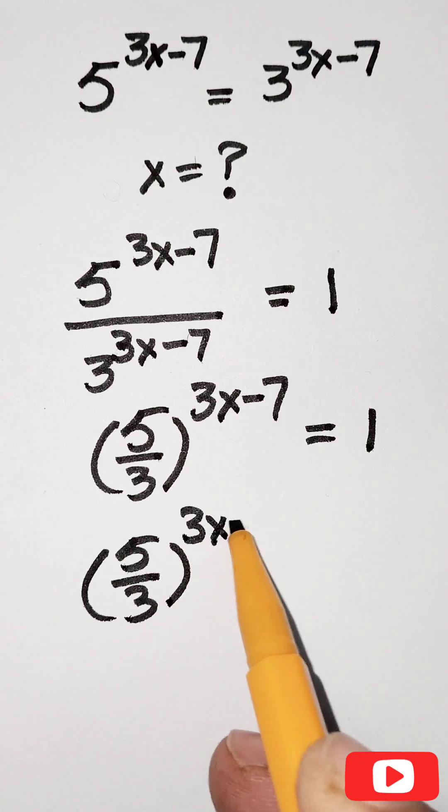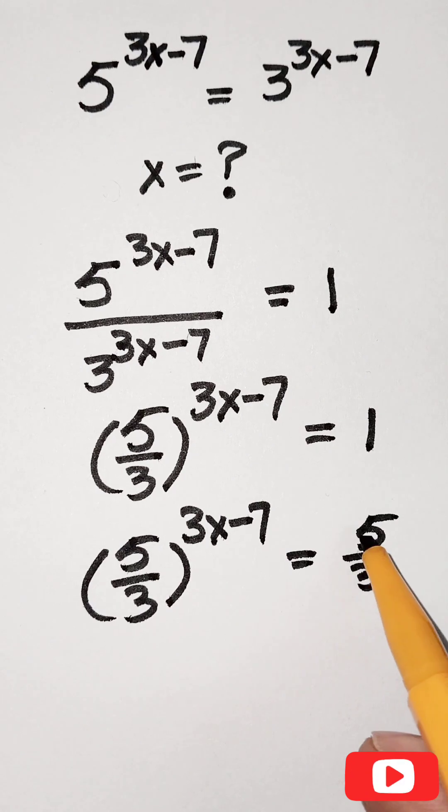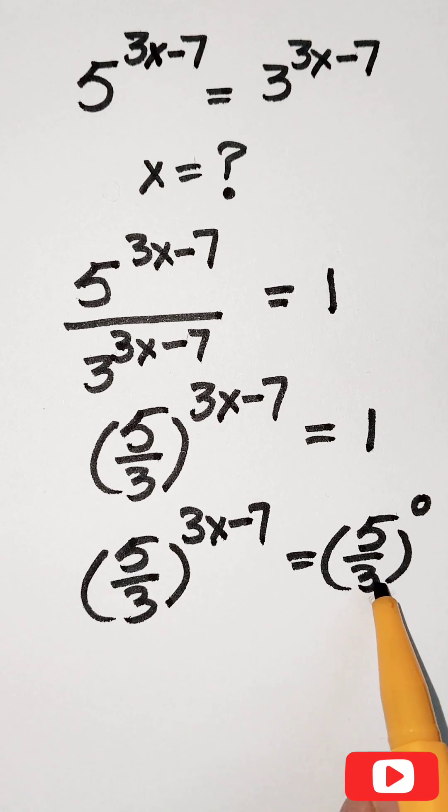5 over 3 to the power 3x minus 7 - and 1 can be written as 5 over 3 raised to the power 0, because we know that a raised to the power 0 equals 1. Since the bases are the same, the exponents must be equal.